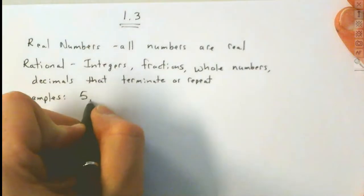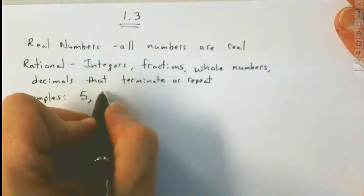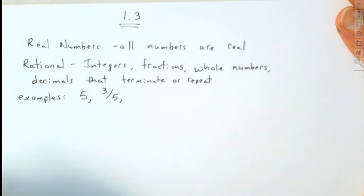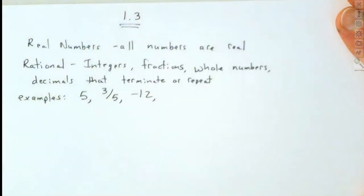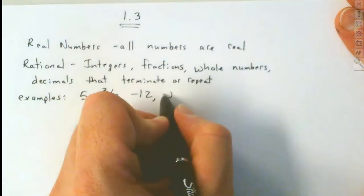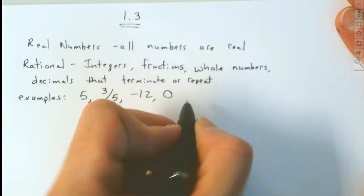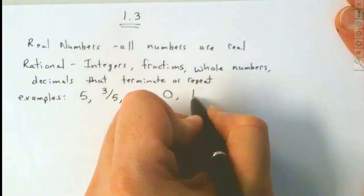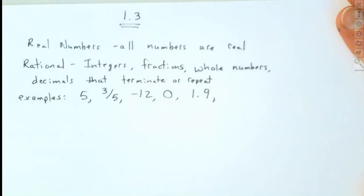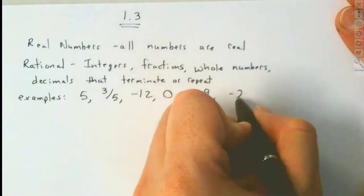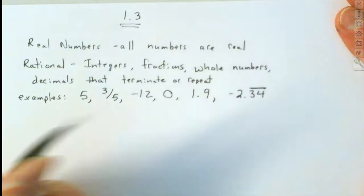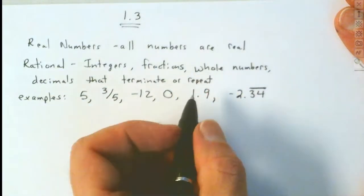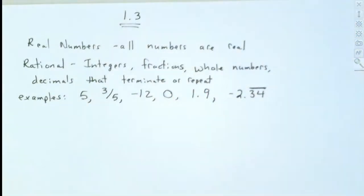Some examples of rational numbers: 5 is a rational number. 3 fifths is a rational number. Negative 12 is a rational number. 0 is a rational number. 1.9 is a rational number because the decimal stops. Minus 2.34 with a bar on top — that bar means it repeats — and that's also a rational number.